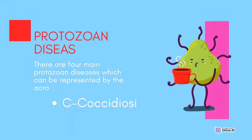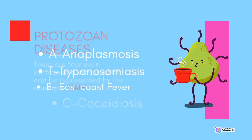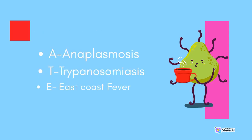Protozoan Diseases. There are four main protozoan diseases which can be represented by the acronym CATE: C for Coccidiosis, A for Anaplasmosis, T for Trypanosomiasis, and E for East Coast Fever.